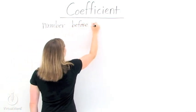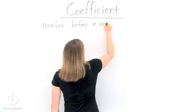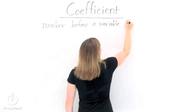Now this constant can be any number, and if you don't see a number in front of the variable or term, then the coefficient is 1.